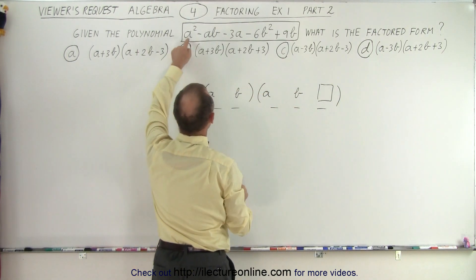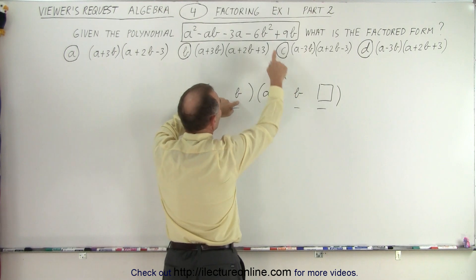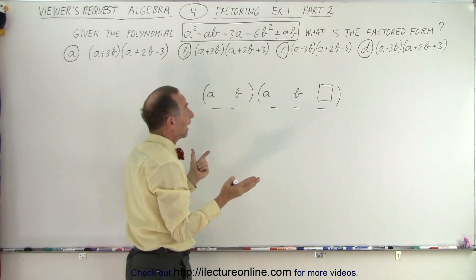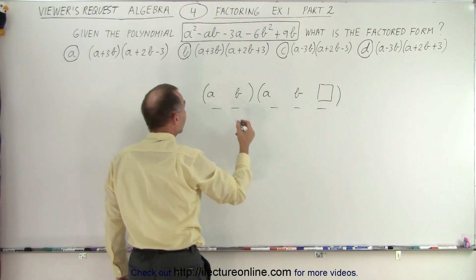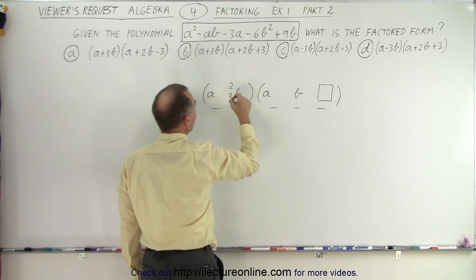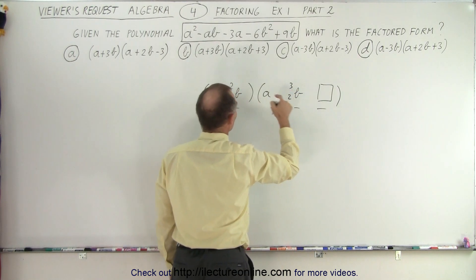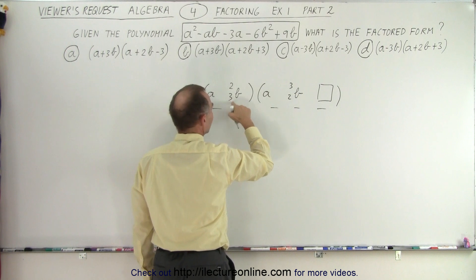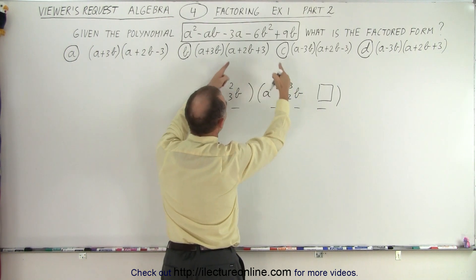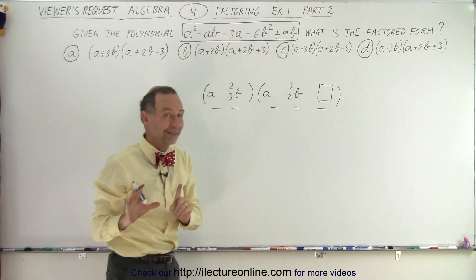So, a times a gives me a squared. b times b gives me b squared. However, I need a six b, b squared. So I need a two or a three, and a three or a two. So if this is a two, that's a three. If this is a three, that's a two, because three times two will give me the six. I don't care about the sign yet.